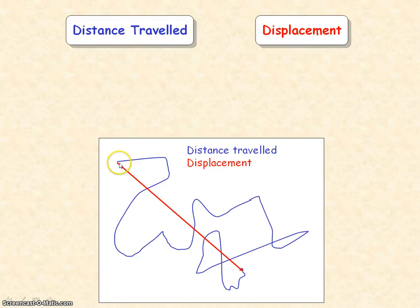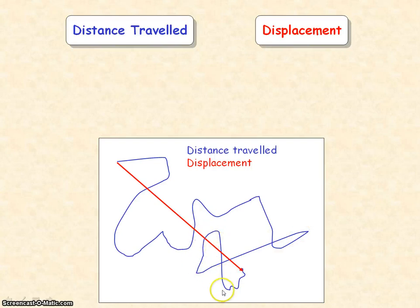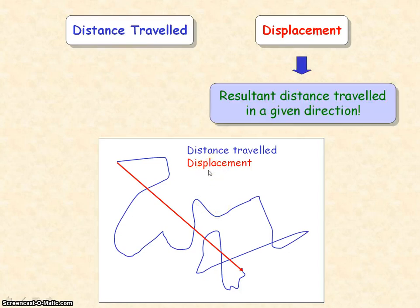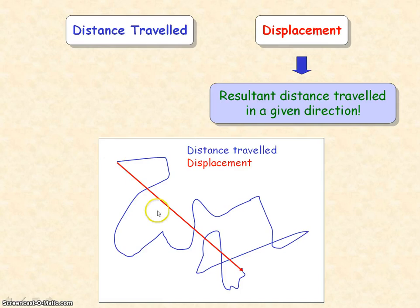This diagram shows the total distance travelled by an object, represented by the blue line. But this is not the same as the displacement. Displacement represents the resultant distance travelled in a given direction and is found from the shortest distance from the start to the end point. The red line represents the displacement, and it's a vector quantity so it has direction.